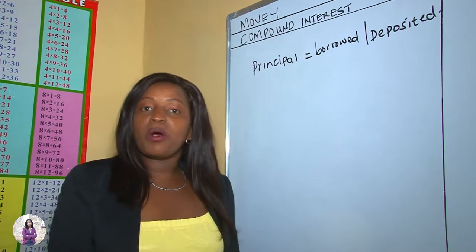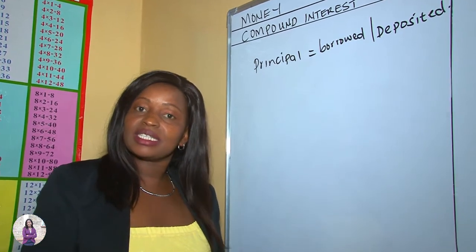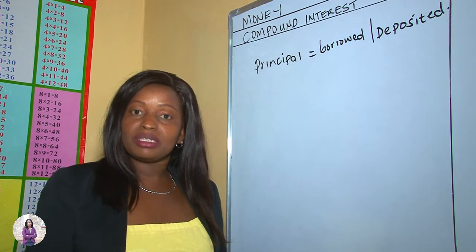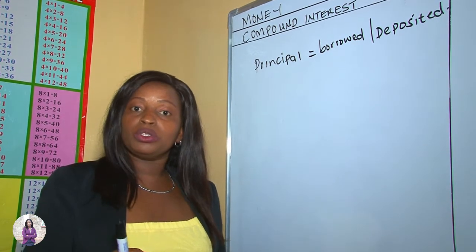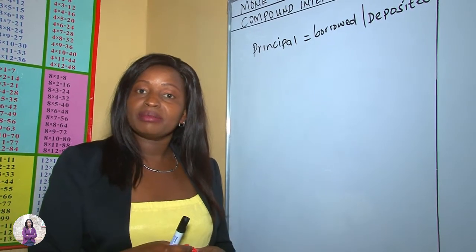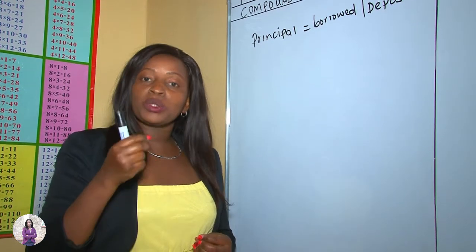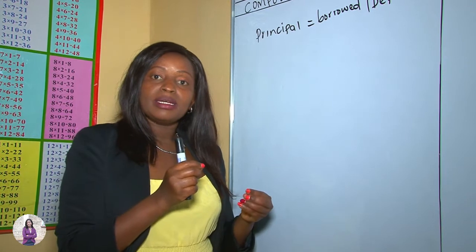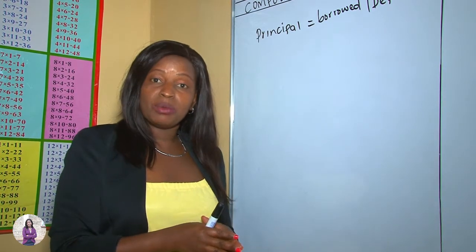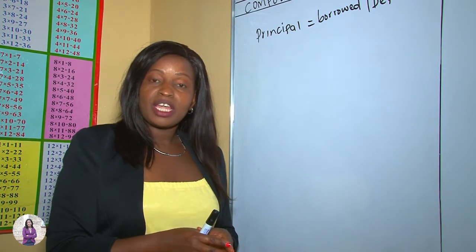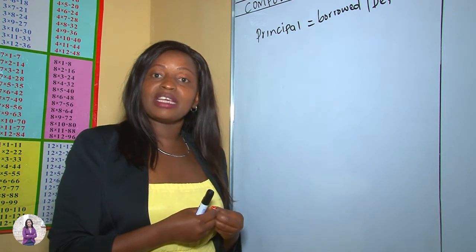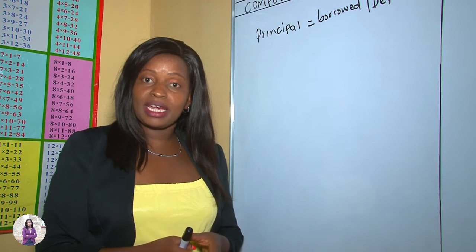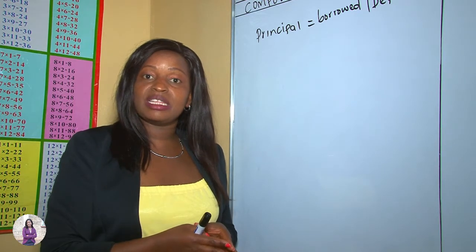What is compound interest? Compound interest is the profit generated by your money. But this time around, if you don't want to withdraw your money after one year, the profit that was generated is added to the money deposited or money borrowed, which is the principal amount.